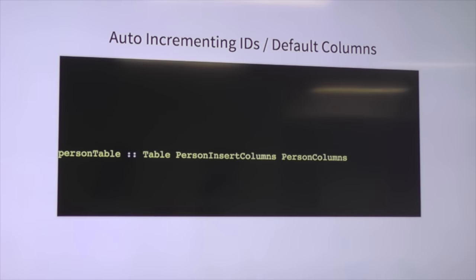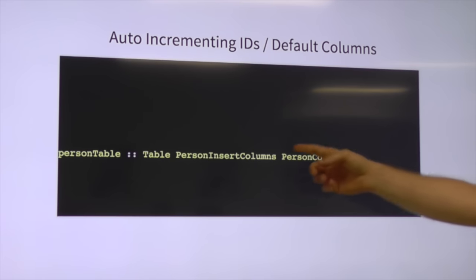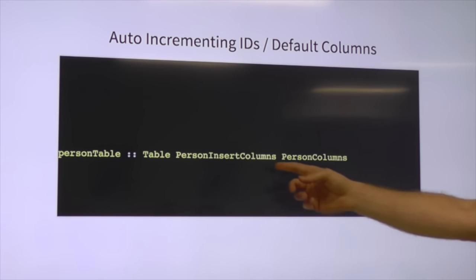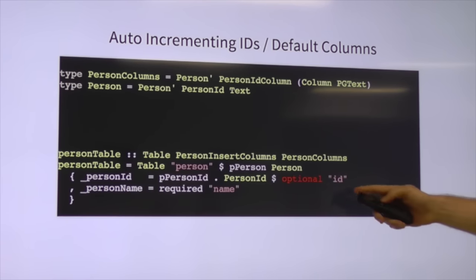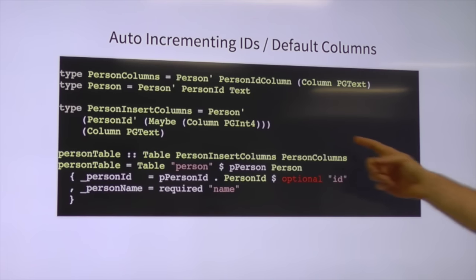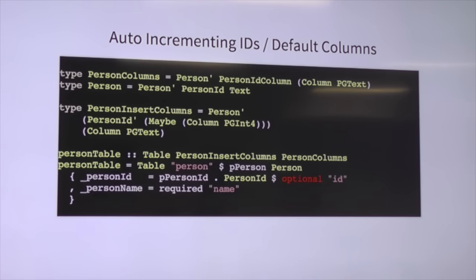The last thing to talk about with table definitions is auto-incrementing IDs and default columns. The `Table` type actually takes two type parameters: one for the column types you expect when writing a row, and one for when you're reading it back out. This is useful because we can say the ID is optional on insert — mapping to a `Maybe` on our column type — so we can send `Nothing` and let the database generate it from a sequence. Not just sequences — you could do this for any default value.